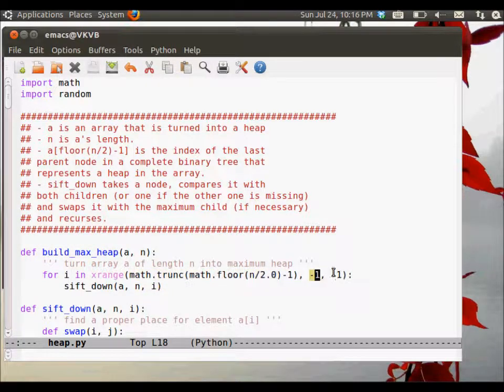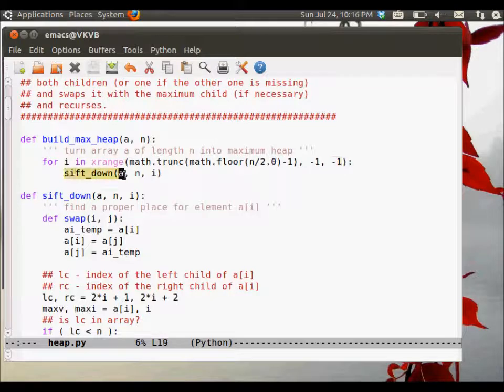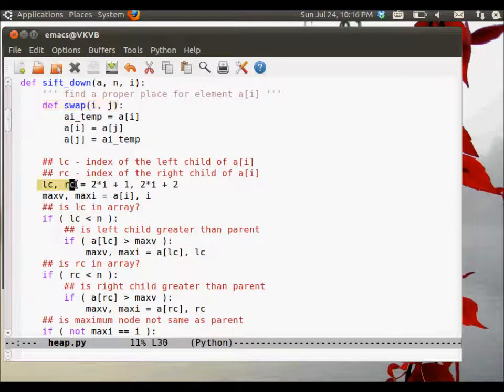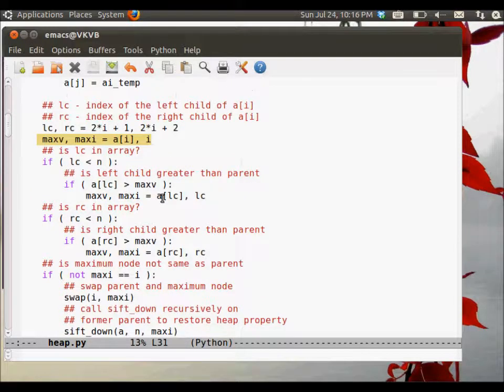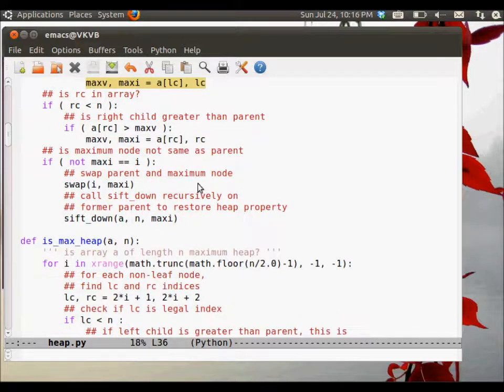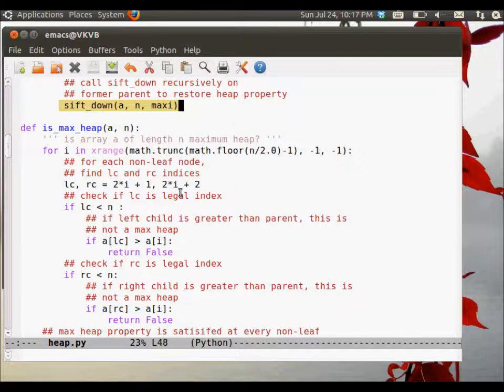This is just the build max heap. We find the index of the rightmost child and then go leftward until we get the roof sifting down every element to its proper place in the heap. This is the implementation of sift down. This is the local implementation of swap. Compute the index of the left and right child. We set the maximum value in the maximum index to a of i and i, respectively, and then we check the left child first and reset the max v and max i values if the value of the left child happens to be greater than its parent. Then we do the same with the right child, and if max i is not the same as i, then we do the swap of i and max i and recursively sift down on max i.